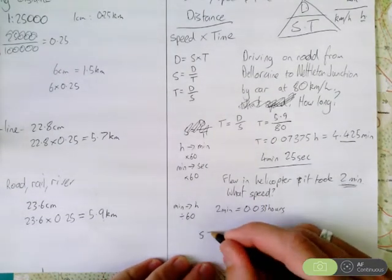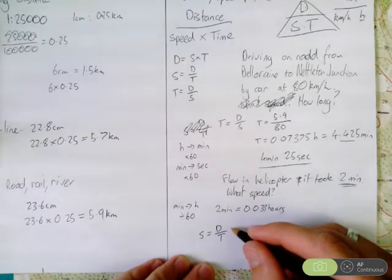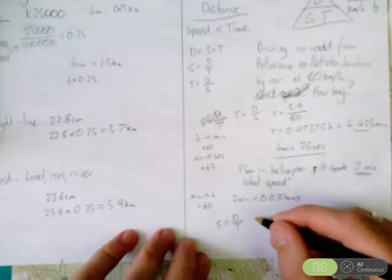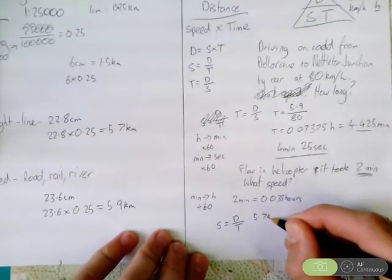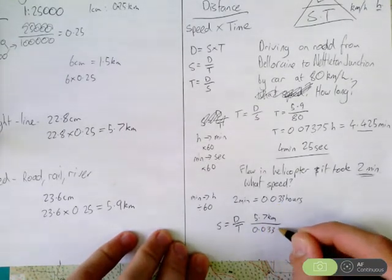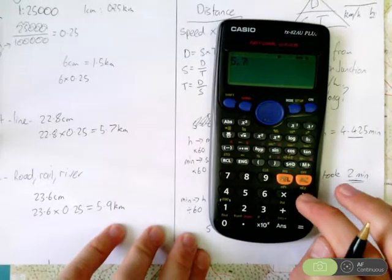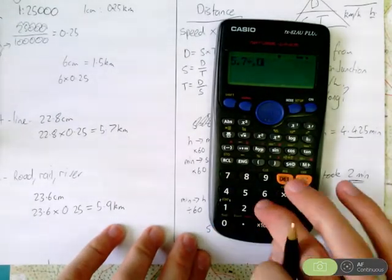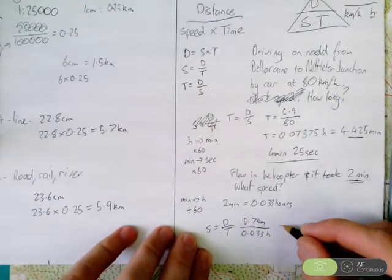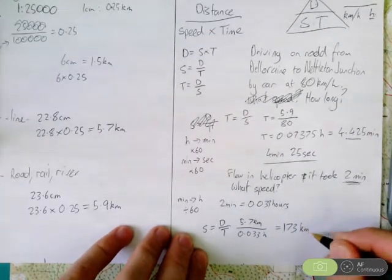So, we're trying to find speed equals distance over time. So, we know our distance straight line, because we're in a helicopter, would be 5.7 kilometers, divided by 0.033 hours. So, we have 173 kilometers an hour.